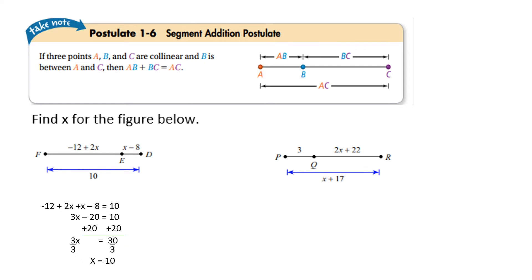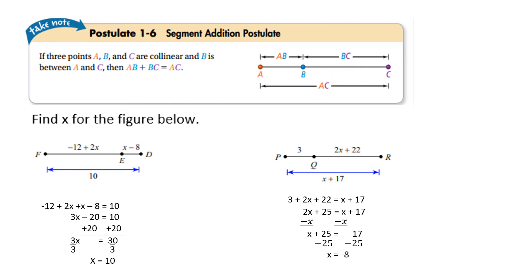Looking at the diagram on the right, PQ plus QR equals PR — the length of the blue segment. That gives the equation: 3 plus 2x plus 22 equals x plus 17. Combining like terms gives 2x plus 25 equals x plus 17. Subtracting x from both sides gives x plus 25 equals 17. Subtracting 25 from both sides gives x equals negative 8.